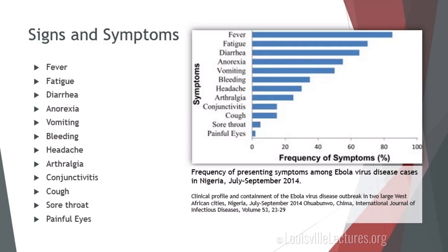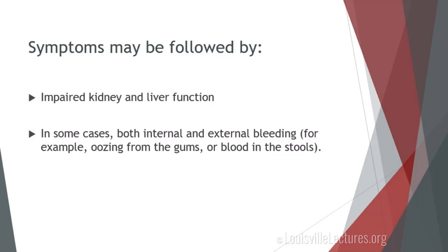A study done in 2014 in Nigeria went through the frequency of the more common symptoms. Fever appeared to be present in over 90% of cases, followed closely by fatigue, then diarrhea, and so on. Once symptoms have been present for a while, the disease can escalate — that's when you begin to see impaired renal and liver function, and even in some cases internal and external bleeding, for example from the gums or blood in stool.